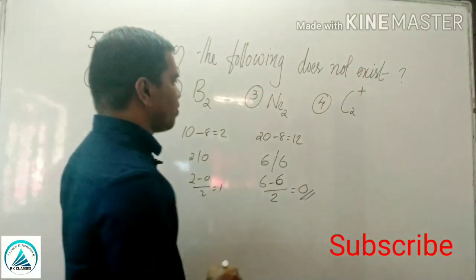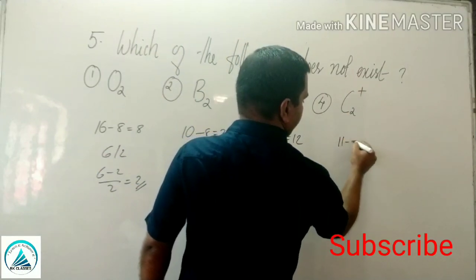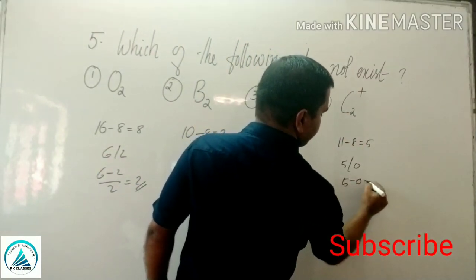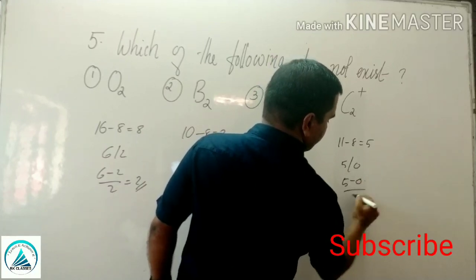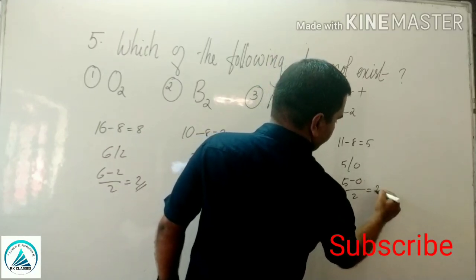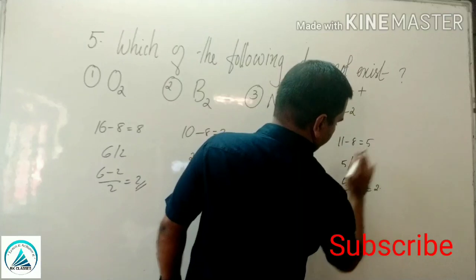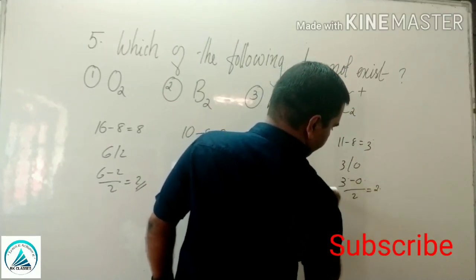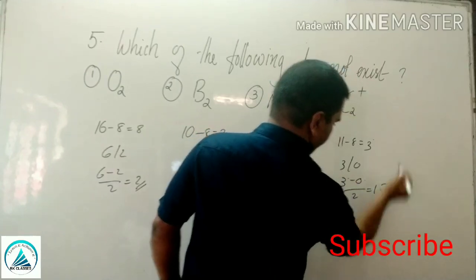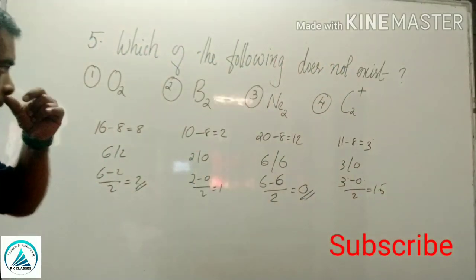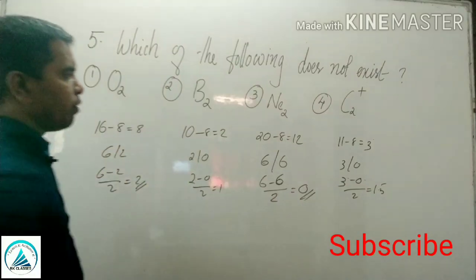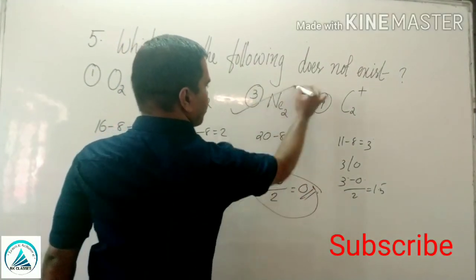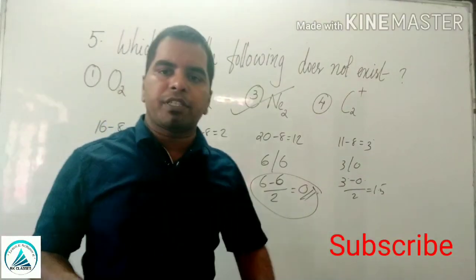N2 (20 electrons) has bond order 0, so the molecule does not exist. C2 plus: 11 electrons. 11 minus 8 = 3 remaining. Bond order = (3 minus 0) divided by 2 = 1.5. Since N2 here has bond order 0, the molecule does not exist. N2 is the answer.